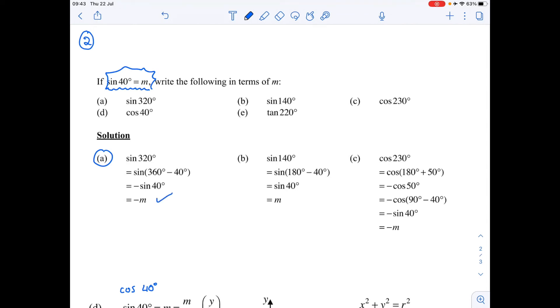I'm going to give, you need to take time to look at these. Sin of 140, number b, we reduce it to sin of 40, which is just m. C, let's have a look at c, we reduce it and we get minus cos of 50.